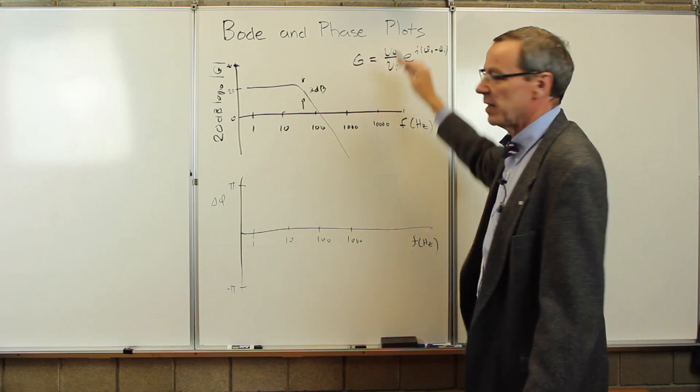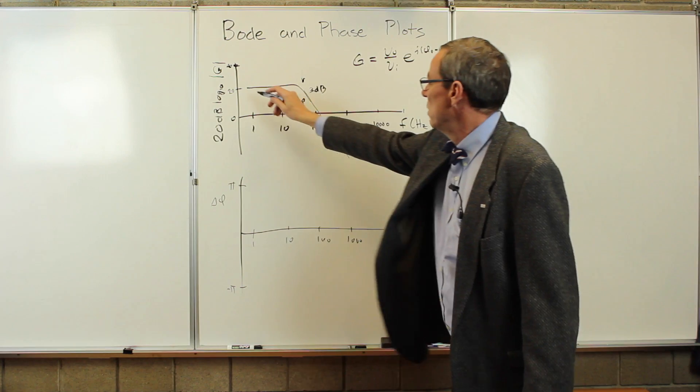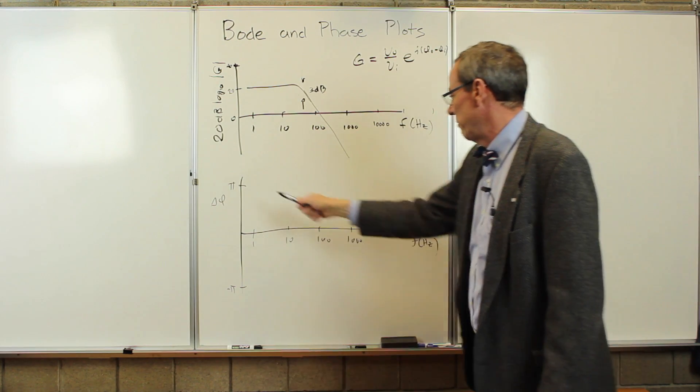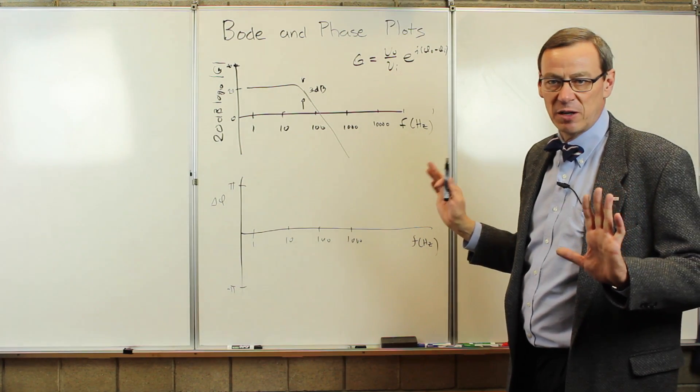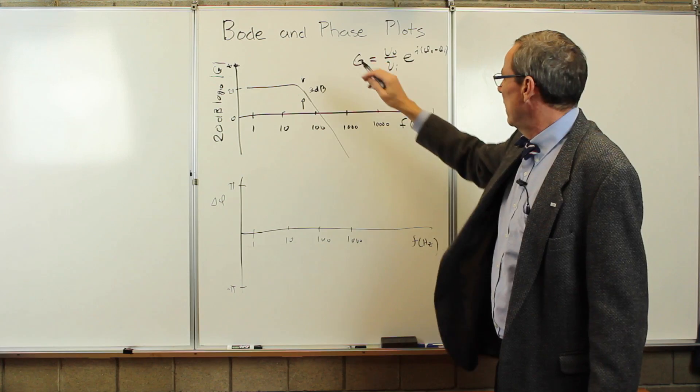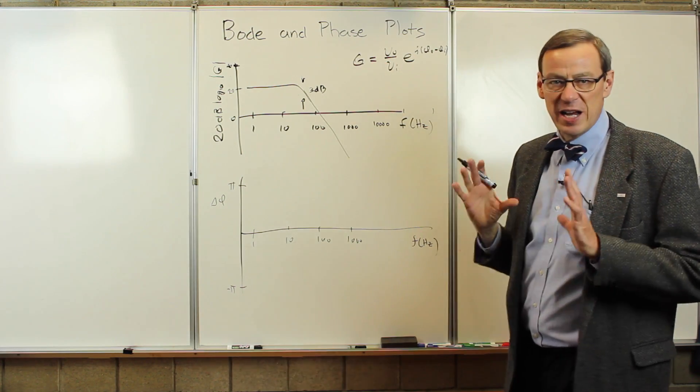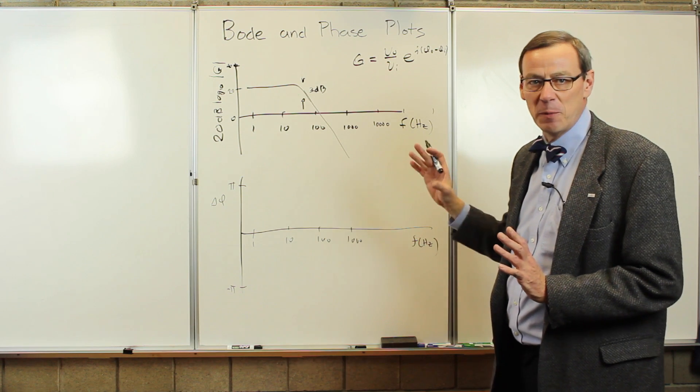Given both the gain on a Bode plot and the phase plot, we have the full complex gain of a circuit. We fully characterized it. So if we go into the lab, we measure the gain and make a Bode plot, and we measure the phase difference and make a phase plot, we fully characterize the complex gain of some circuit. And a Bode plot and a phase plot are sort of the standard way that we're going to represent these things in the lab. So they're a very important concept.